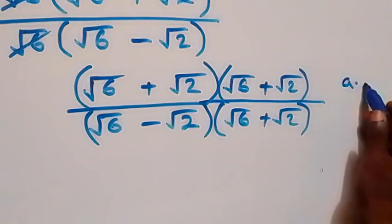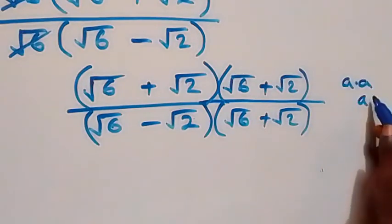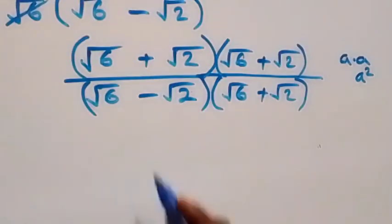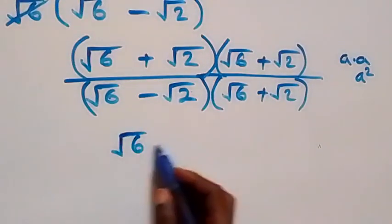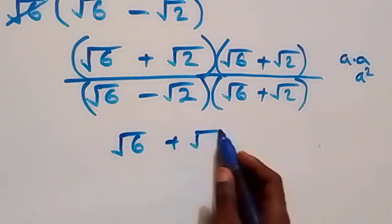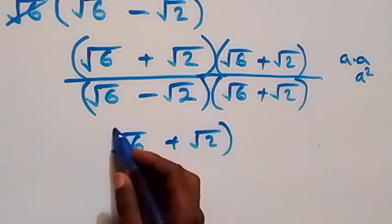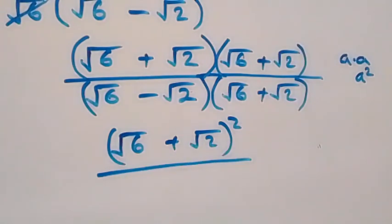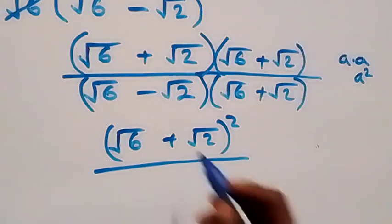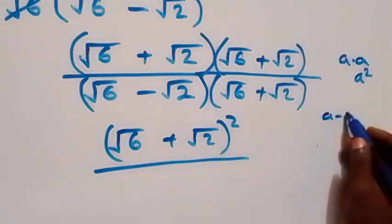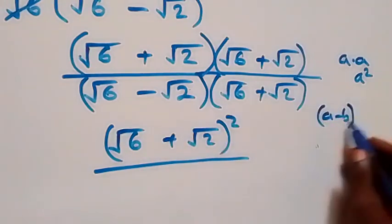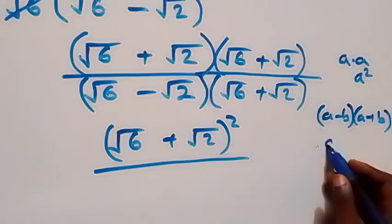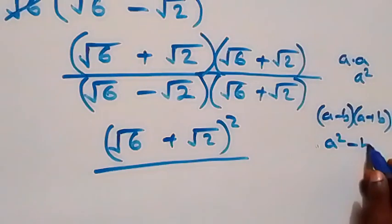So we multiply by root 6 plus root 2 on both top and bottom. The numerator follows from (a times a) which is a squared, since the two brackets are the same. The denominator follows from (a minus b)(a plus b) which equals a squared minus b squared.